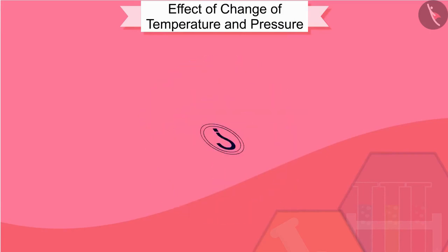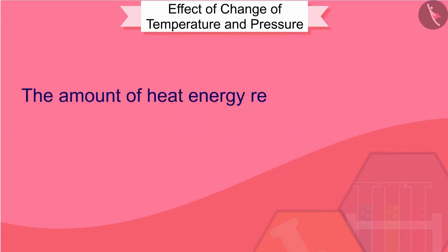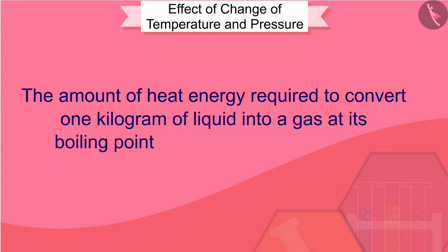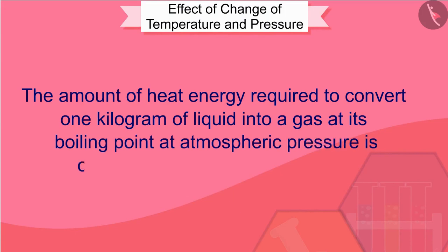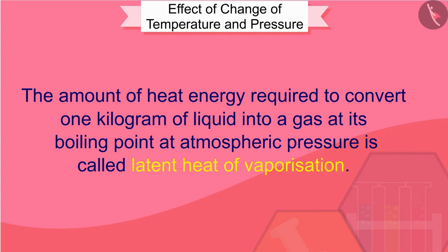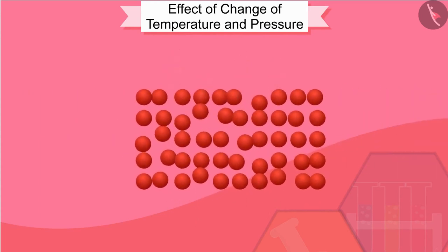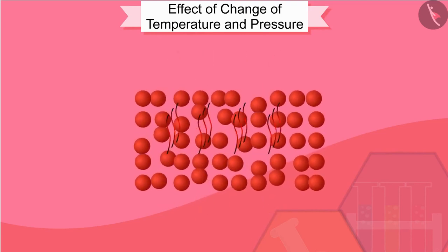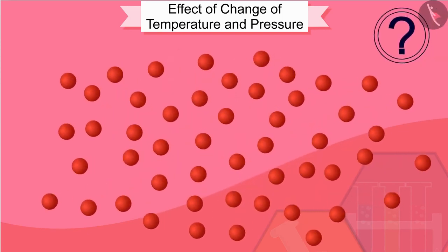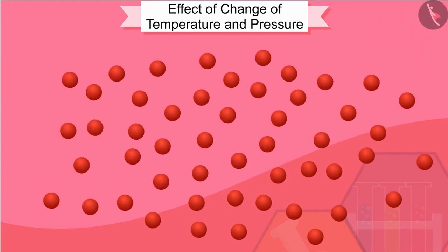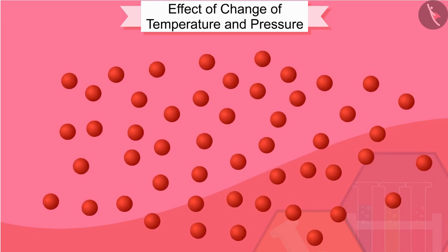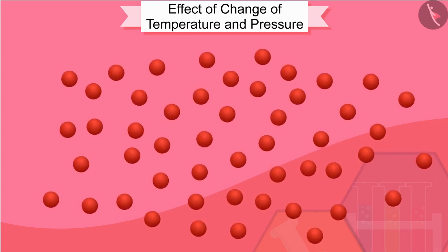The amount of heat energy required to convert 1 kg of liquid into a gas at its boiling point at atmospheric pressure is called latent heat of vaporization. At 100 degrees Celsius, vapour particles have more energy than water particles at the same temperature. This is because vapour particles have absorbed excess heat in the form of latent heat of vaporization.